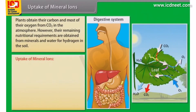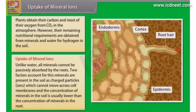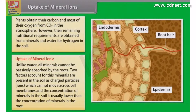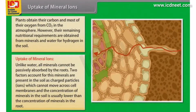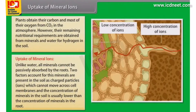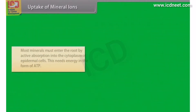Let us first know how plants uptake mineral ions. Unlike water, all minerals cannot be passively absorbed by the roots. Two factors account for this: minerals are present in the soil as charged particles or ions, which cannot move across cell membranes, and the concentration of minerals in the soil is usually lower than the concentration of minerals in the root.